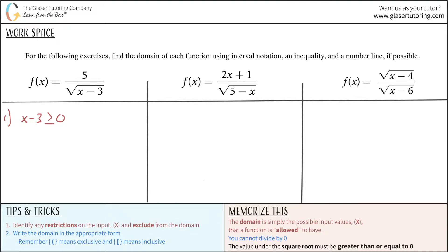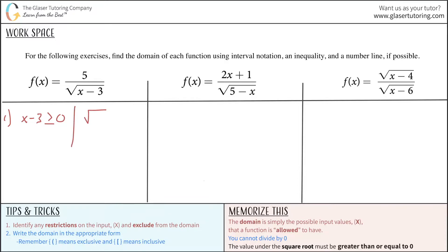The second thing, taking a step back: we also realize that whatever is in the denominator in totality cannot be equal to zero. You cannot take five and divide it by zero — that is impossible. So whatever this whole denominator equals, it can't be equal to zero. In other words, the square root of x minus three cannot equal zero. These are the restrictions. I'm going to look at each restriction independently and then combine them at the end into a number line.